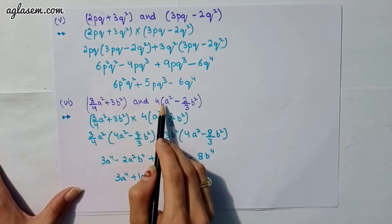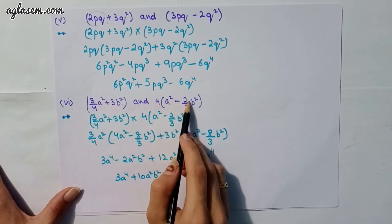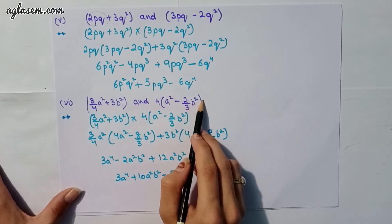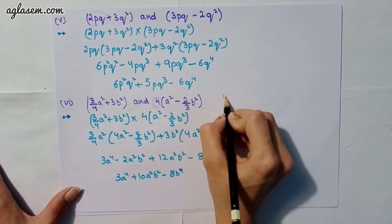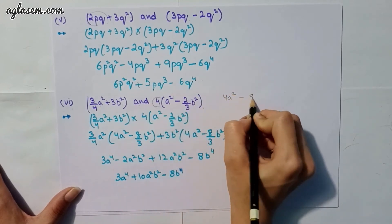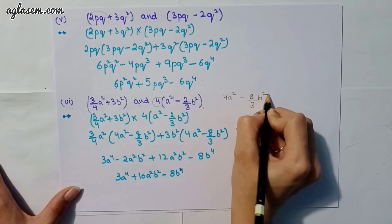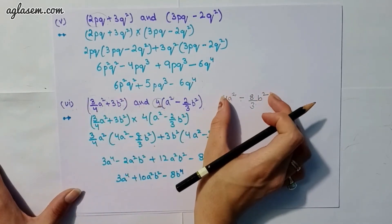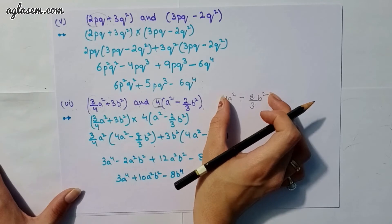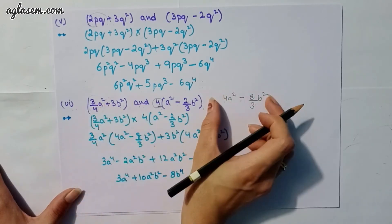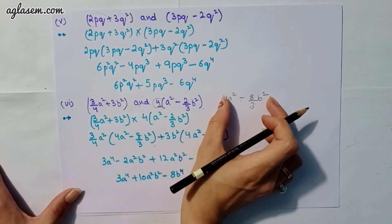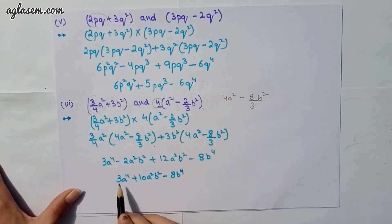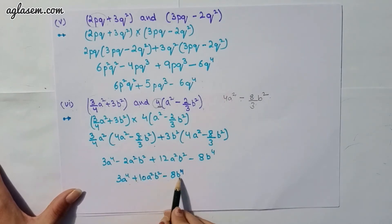The fifth part has (3/4 a² + 3b²) and 4(a² − 2/3 b²). First, we multiply the 4 through to get 4a² − 8/3 b². Then 3/4 a² is multiplied by this whole bracket and plus 3b² also multiplies by this whole bracket. Our answer will be 3a⁴ + 10a²b² − 8b⁴.